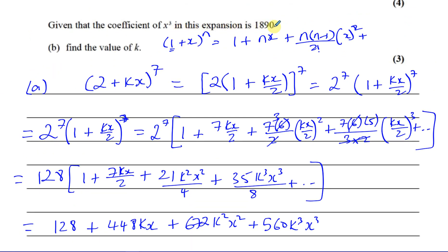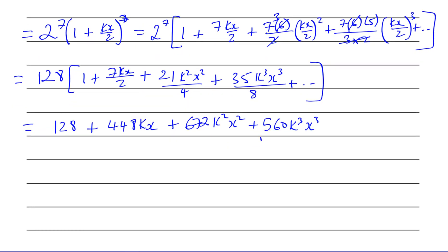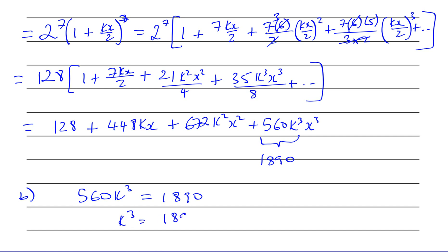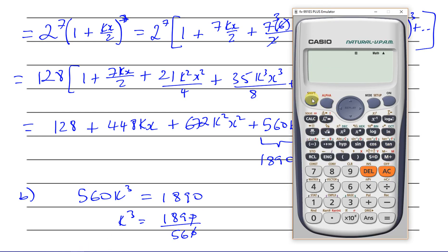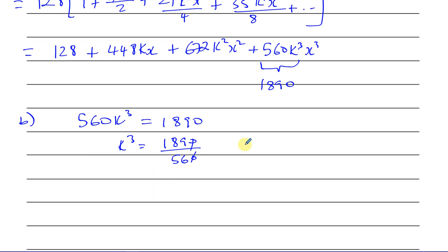The next part says: given that the coefficient of x³ in this expansion is 1890, find the value of k. We know that 560k³ = 1890, so k³ = 1890/560 = 189/56. Taking the cube root gives k = 3/2. So k equals 3 over 2.